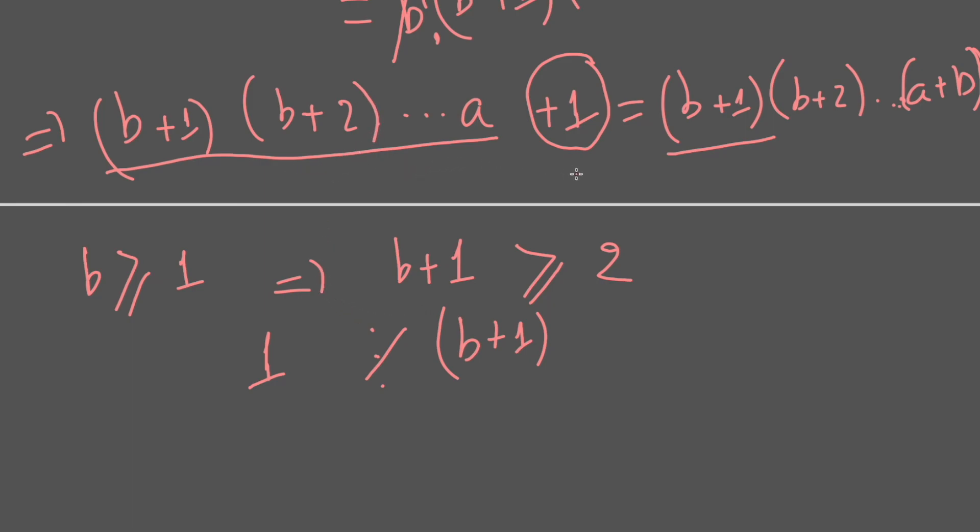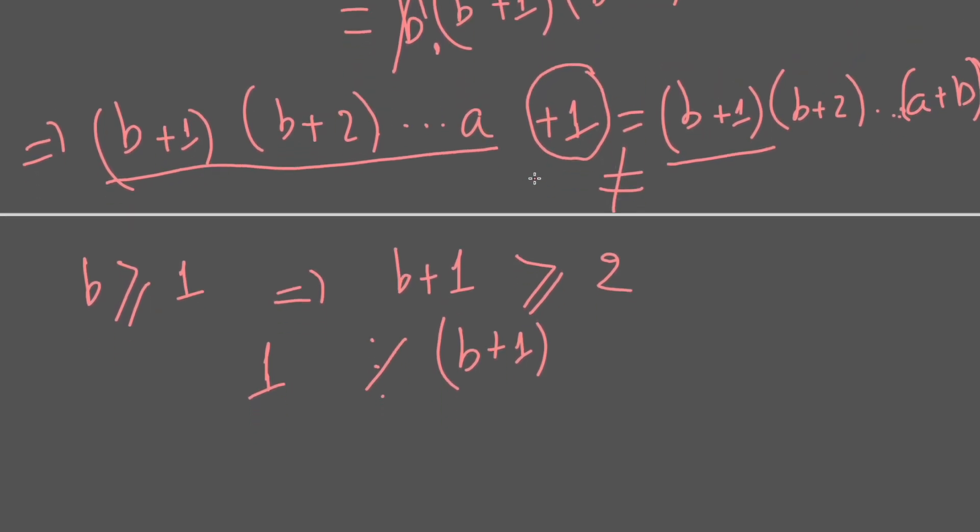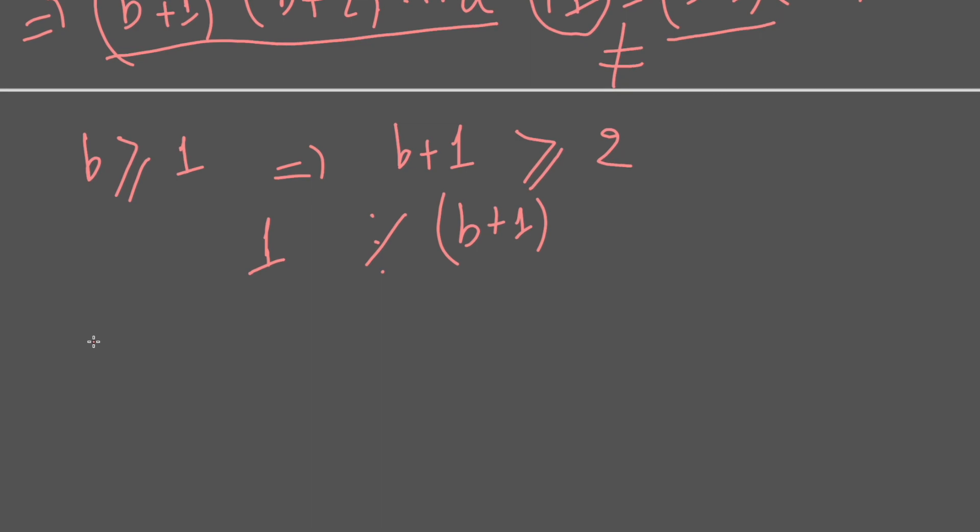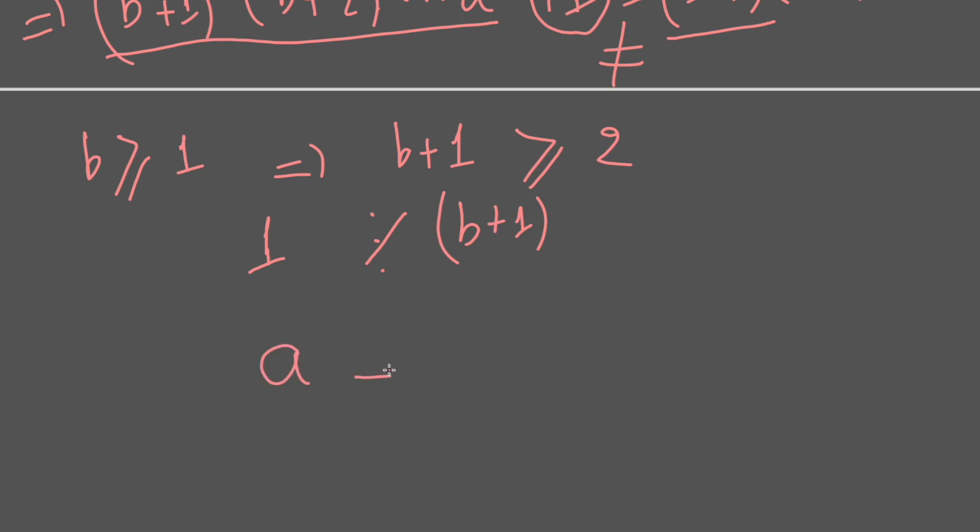Then there is no solution in the second case. So we only have the first case: a equals b equals 1. That is the solution we have to find. That's it, thanks for watching. See you later, bye bye!